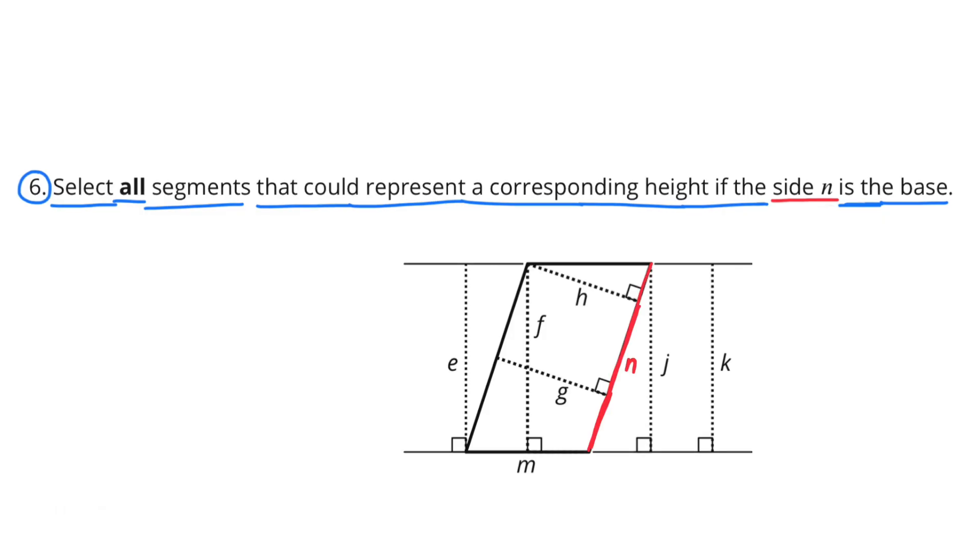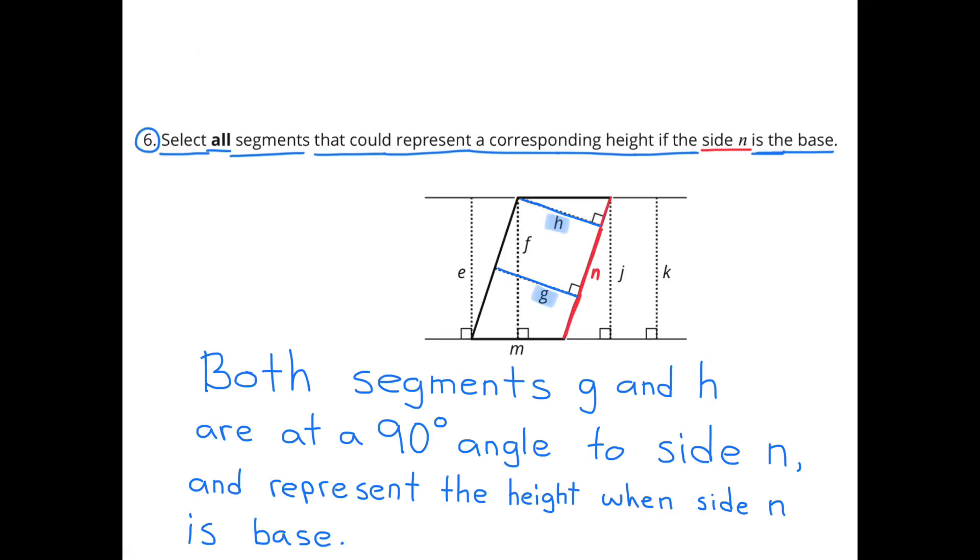In order to find the height, we need to find side lengths that are at a ninety-degree angle compared to side N. I've drawn side N in red. And both segments G and H are at ninety-degree angles to side N and represent the height when side N is base.